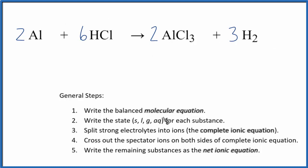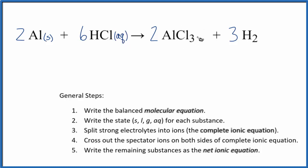Once you balance the molecular equation, you can write the states in for each substance. Aluminum by itself is a solid. Hydrochloric acid is a strong acid and a strong electrolyte — it will break apart into its ions, so we write aqueous. Aluminum chloride — chlorides are usually very soluble — that's also going to break apart in water, so we write aqueous. And hydrogen is a gas.